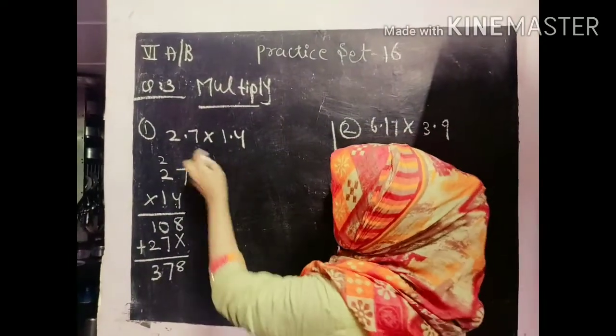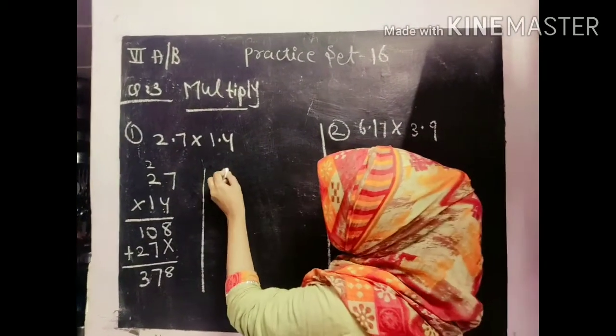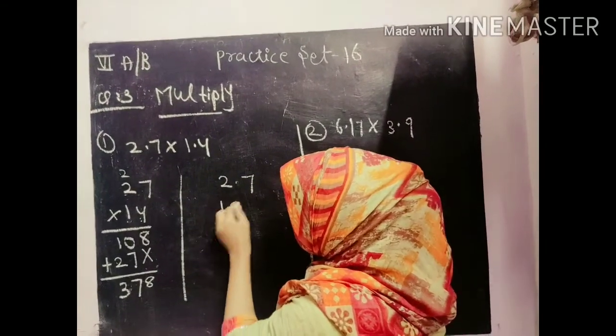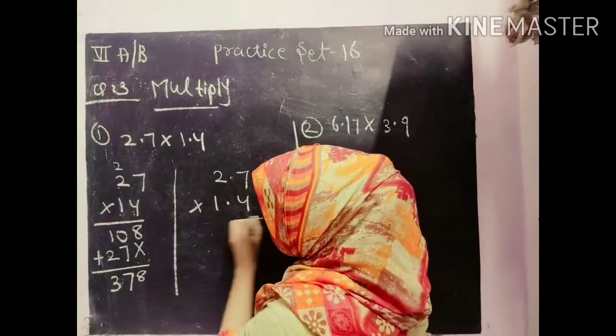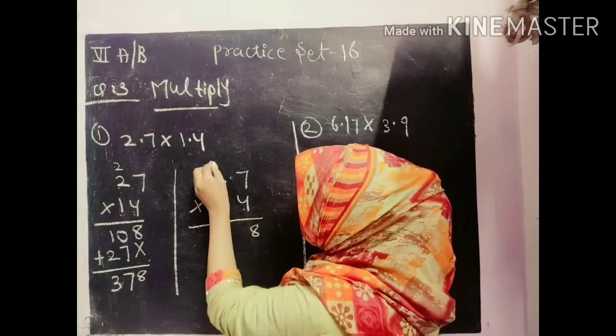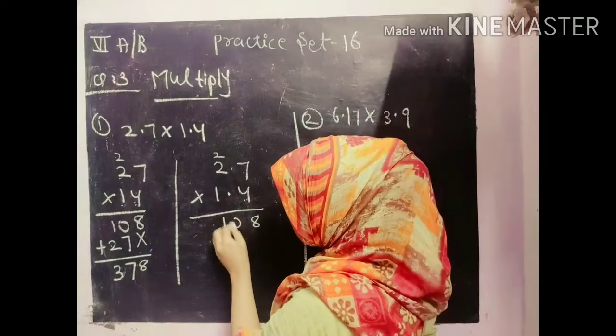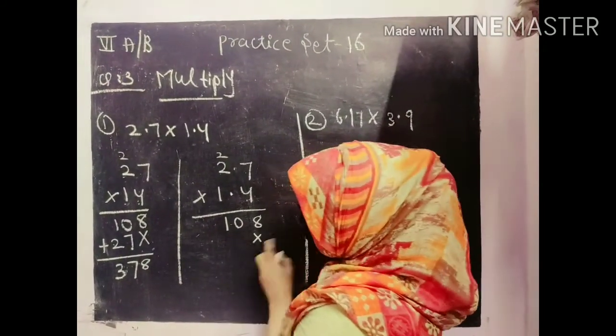And we can do directly by using point numbers. How? 2.7 and 1.4. 4, 7's are 28. Here 2 will come. 4, 2's are 8. And 2, 10.